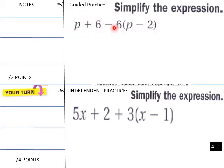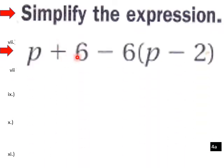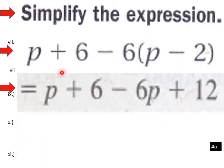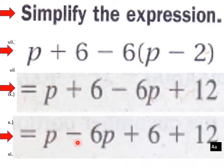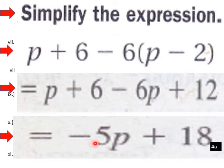Now let's simplify the guided practice expression. We have p plus 6 minus the quantity 6 times the quantity p minus 2. This gives us negative 6 times p and negative 6 times negative 2, so we have p plus 6 minus 6p plus 12. Combining like terms, we group p minus 6p plus 6 plus 12, which further simplifies to negative 5p plus 18.